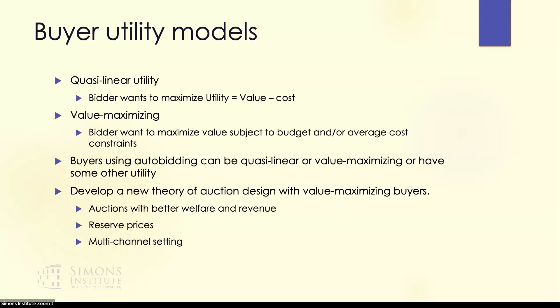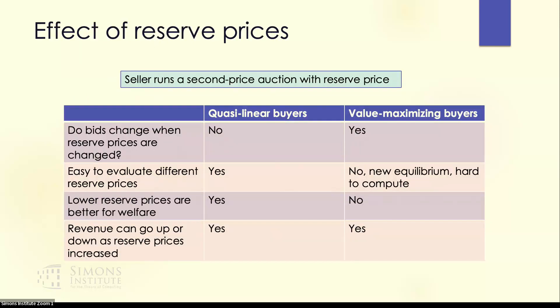There is an emerging area of research with lots of ongoing work where the goal is to develop a theory of auction design under value-maximizing buyers. Questions include: can we design auctions with better welfare and revenue? What happens when we change reserve prices? How do we optimize for reserve prices? There is also the multi-channel setting, which is interesting in this case. I'll talk about two of these things — reserve prices and auction design. We first discuss the effect of reserve prices and how it differs between quasi-linear buyers and value-maximizing buyers. Let's assume the seller is using a second price auction for every item.